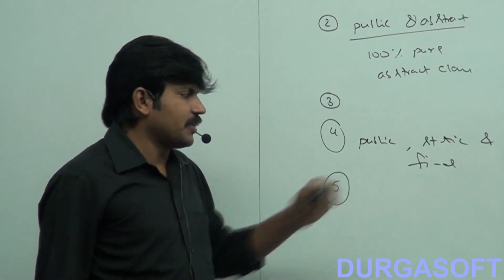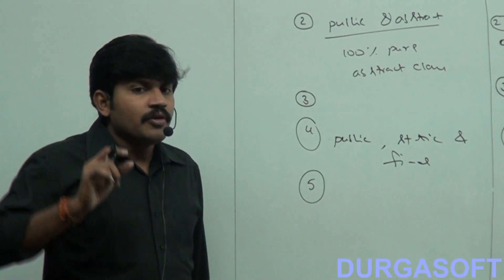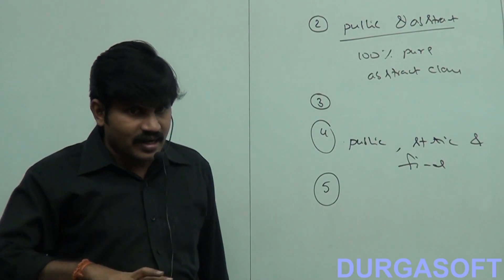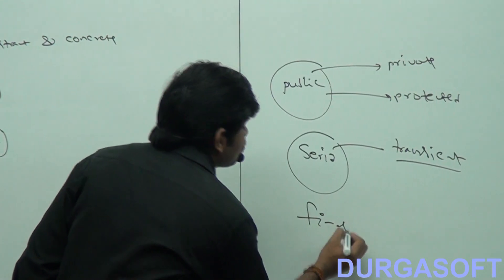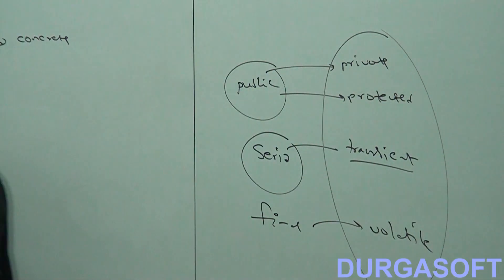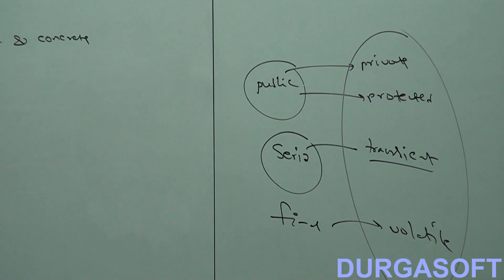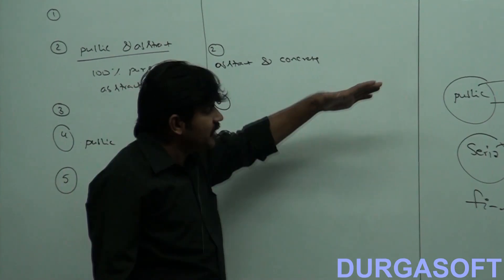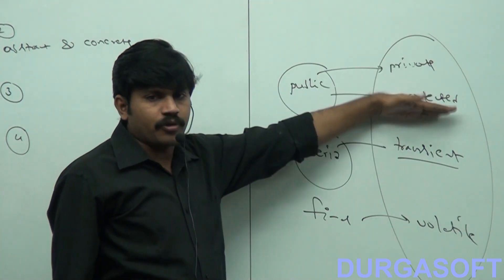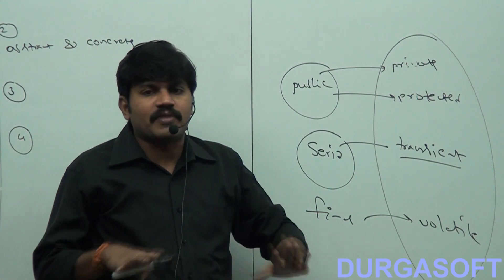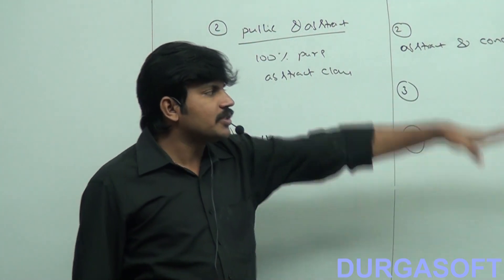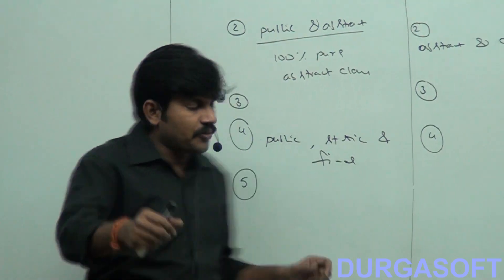Every interface variable is always final. If it is always final, we can't apply the volatile modifier, because volatile means the value keeps changing while final means the value is fixed — that's a contradiction. So private, transient, and volatile are not applicable for interface variables. But for abstract class variables, happily we can apply all these modifiers — there are no restrictions.